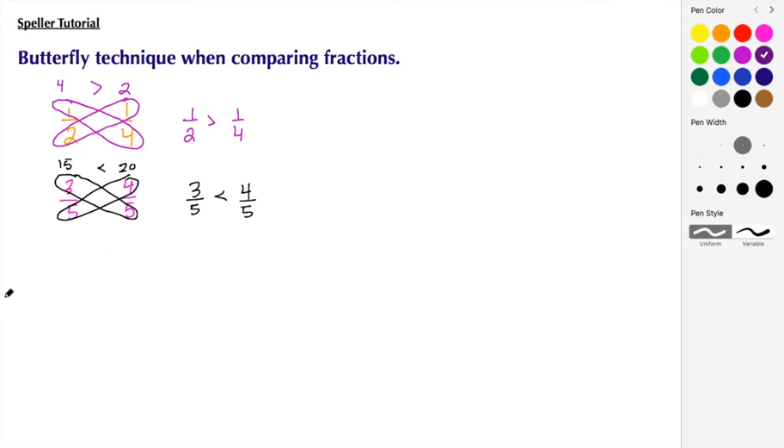For our next example, let's compare 5 eighths to 5 ninths.